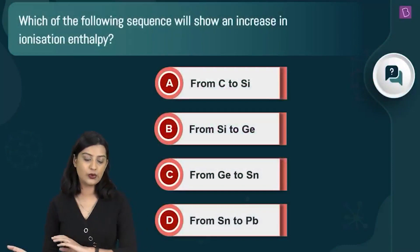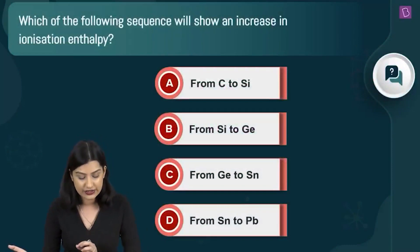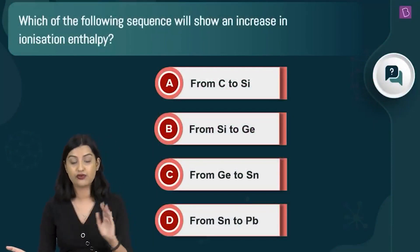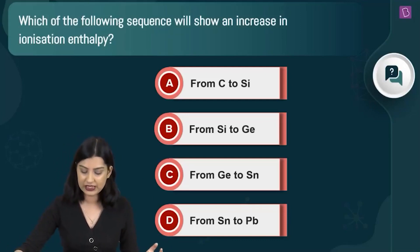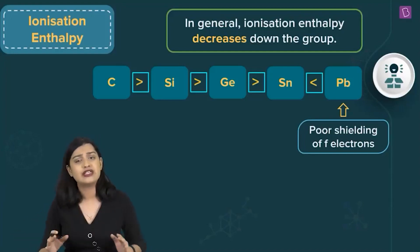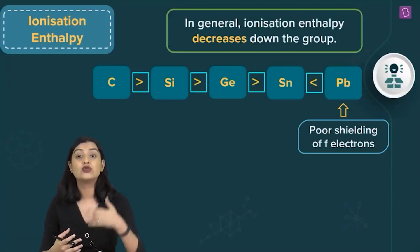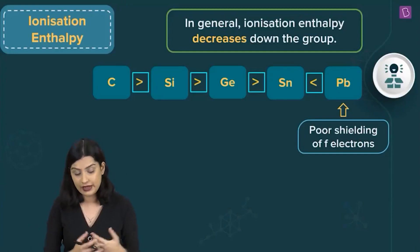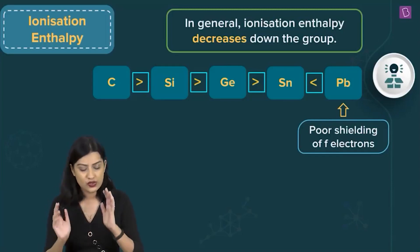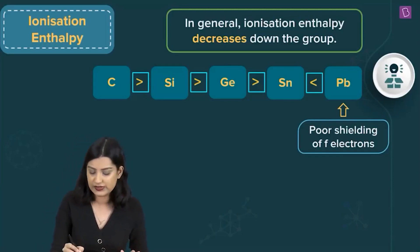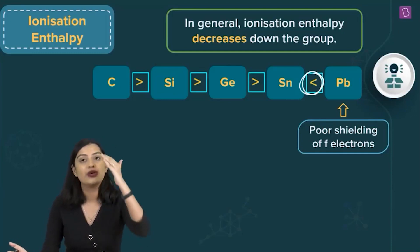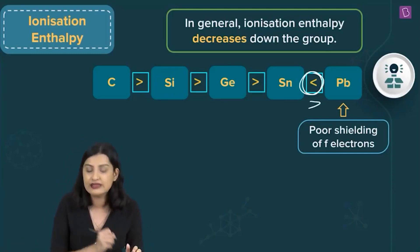The next question asks which sequence shows an increase in ionization enthalpy among group 14 elements: carbon to silicon, silicon to germanium, germanium to tin, or tin to lead. The general trend is that ionization enthalpy decreases as we go down a group, but there are exceptions in the p-block. Going down group 14 — carbon, silicon, germanium, tin, lead — the expected progressive decrease holds mostly.